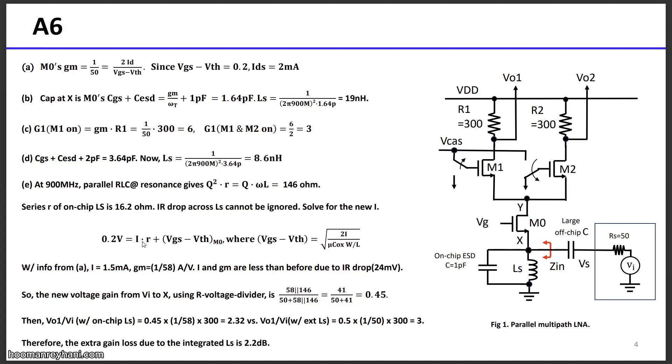So let's solve for the new current because M0 now has less overdrive voltage, the Vgs minus Vt, because you lose some voltage drop due to the finite Q of LS. You can set up the equation here. You can solve for the current. This is the overdrive voltage before. And now this voltage is shared between the IR drop across the inductor, which is I times R, and the Vgs minus Vt of the M0, where that quantity is equal to square root 2i over mu C ox WL, according to the review material. If you solve for the current, it comes out to be 1.5 milliamp. So it was 2 milliamp before, now it is reduced. And that GM, which was 1 over 50 ohm, it became 1 over 58 ohm. So it is less than before because of the IR drop across the inductor.